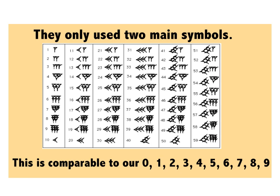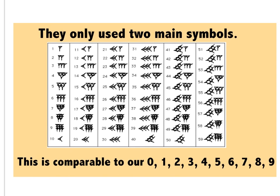As you can see in this chart, they only use two main symbols. There's this symbol here, and this symbol here. So that is compared to the digits that we have: 0, 1, 2, 3, 4, 5, 6, 7, 8, and 9. Those are the numerals that we see in our number system.